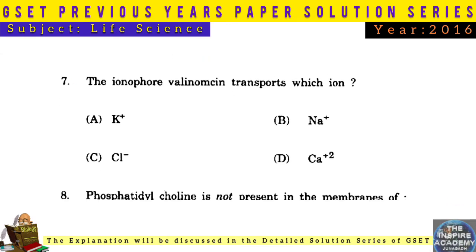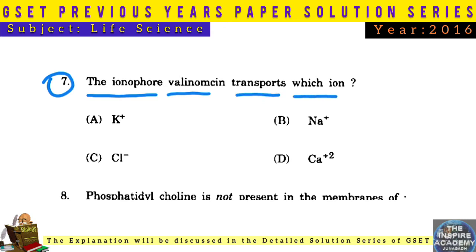Question No. 7: The ionophore valinomycin transports which ion? Answer: Potassium ion, K+.